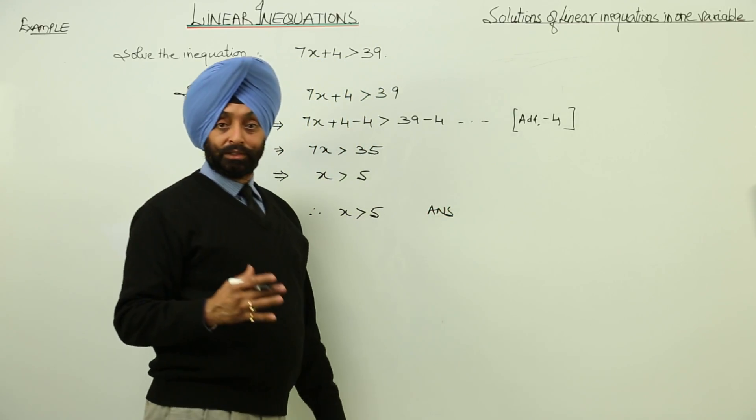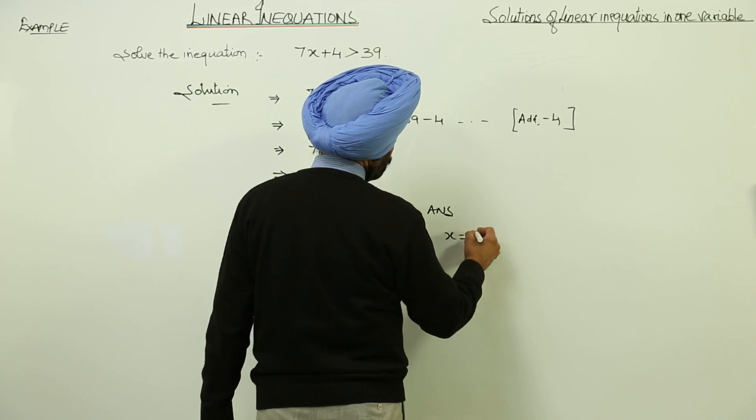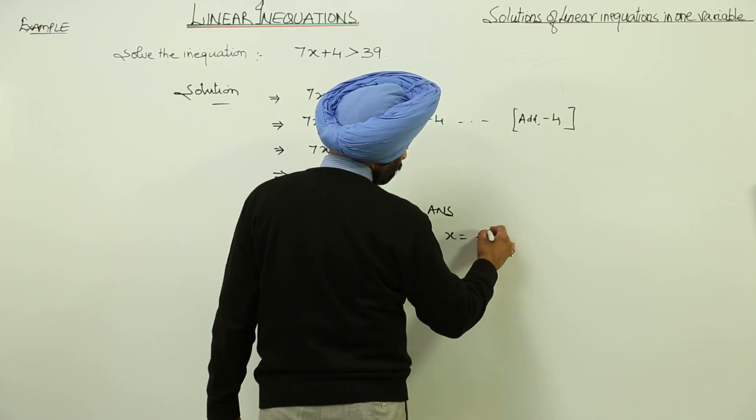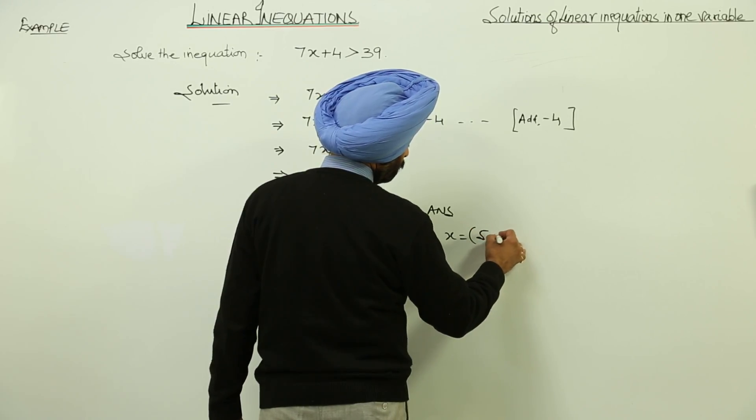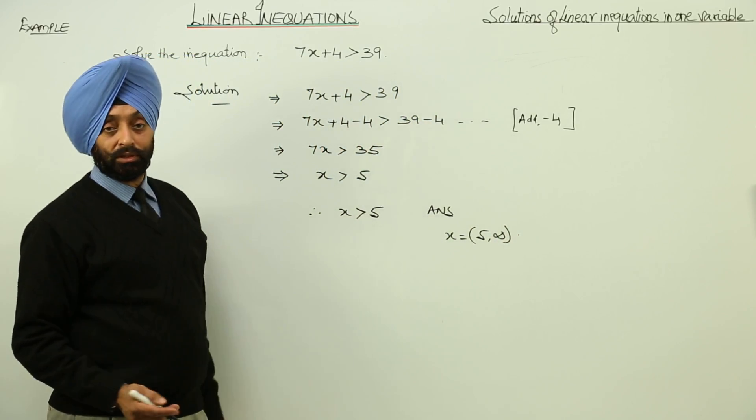And in the interval form, we can just write it now. x is equal to 5 to infinity. So this is the answer.